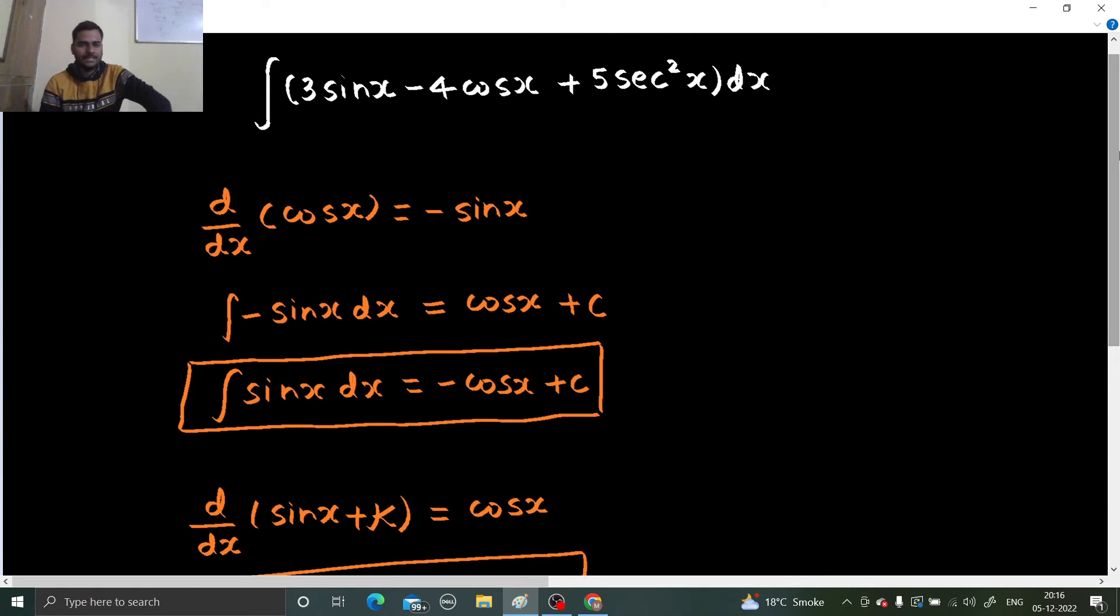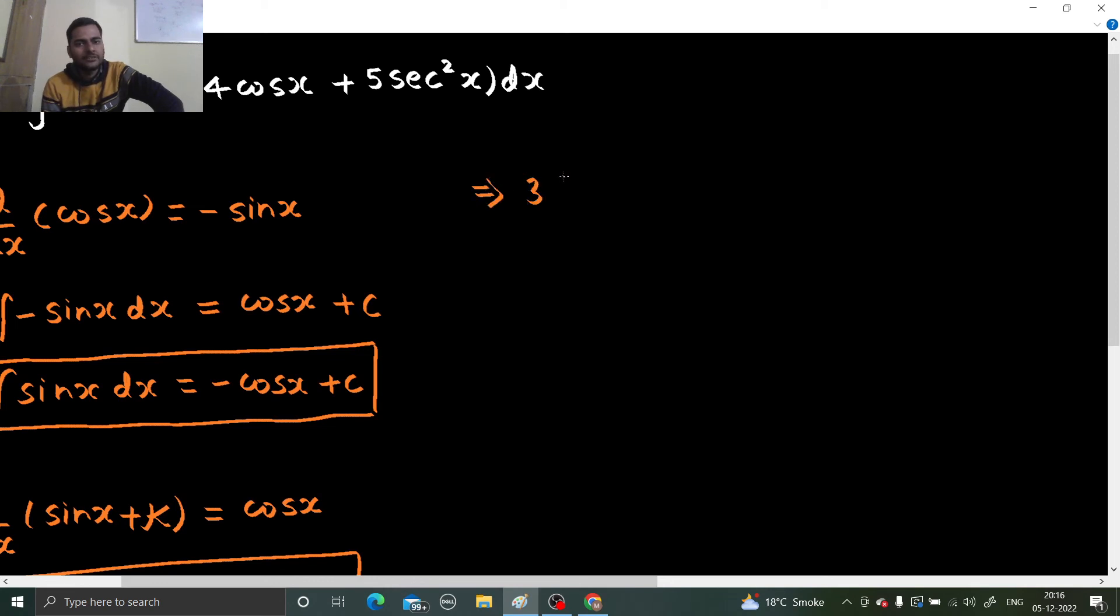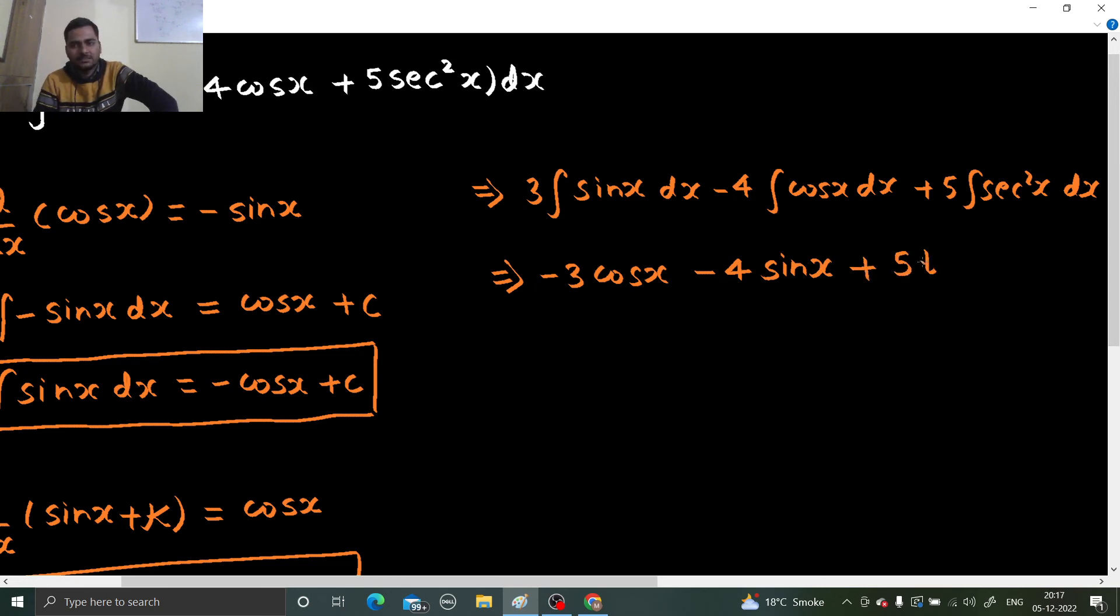So let's see what we can do here in this problem. We can separate this and write three integral of sin x dx minus four comes out, integral of cos x dx, and five comes out, integral of secant square x dx. Integral of sin x, as I tell you, that is minus of cos x, so minus three cos x. Integral of cos x is sin x only. Integral of secant square x is tan x, and plus a constant C.